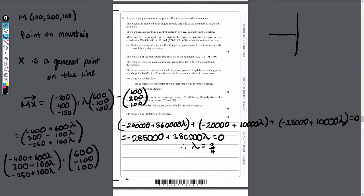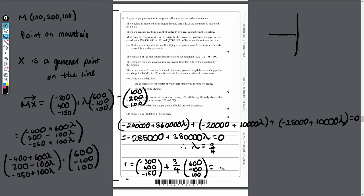We've got our lambda value now. Using that with the R equation from part A: R equals (-300, 400, -150) plus (3/4) lots of (600, -100, 100). Working out each coordinate individually gives coordinates (150, 325, -75). That's the coordinates of the point at which the tunnel meets the pipeline. That's part B first part done.